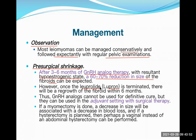GnRH analog such as leuprolide (trade name Lupron) is commonly used. Once leuprolide is terminated, the fibroid will regrow within six months as the hormonal cycle restarts. GnRH analogs cannot be used for definitive cure but are used in the adjuvant setting with surgical therapy. There are two types of surgery: myomectomy (only the myoma is removed, uterus preserved) and hysterectomy (whole uterus is removed along with the tumor).